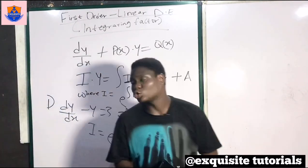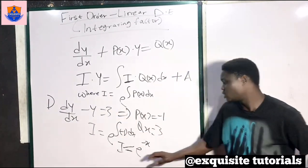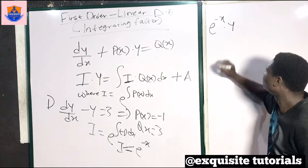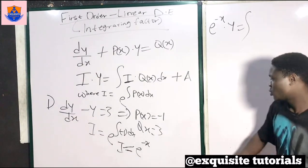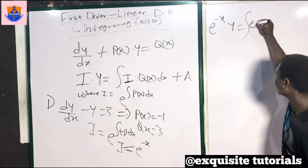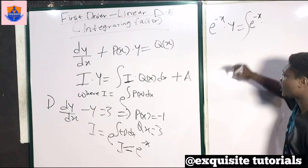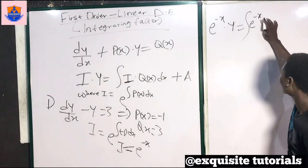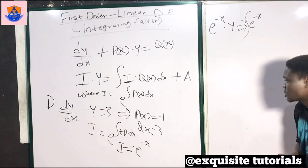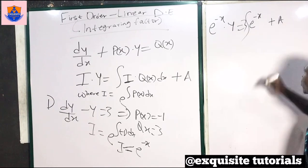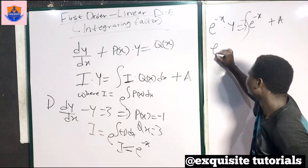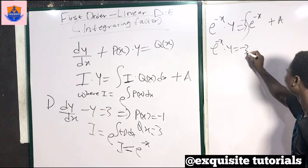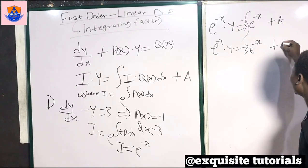What will be the solution to the differential equation? It is the integrating factor, which is e^(−x), times y, equals the integral of the integrating factor e^(−x) times q of x. Our q of x is 3, so we have times 3 — I can bring that 3 out as it is a constant — plus our general constant. When I integrate this, I get minus 3 e^(−x) plus our constant.